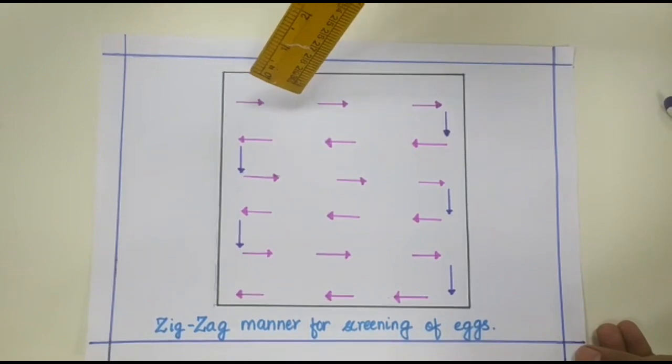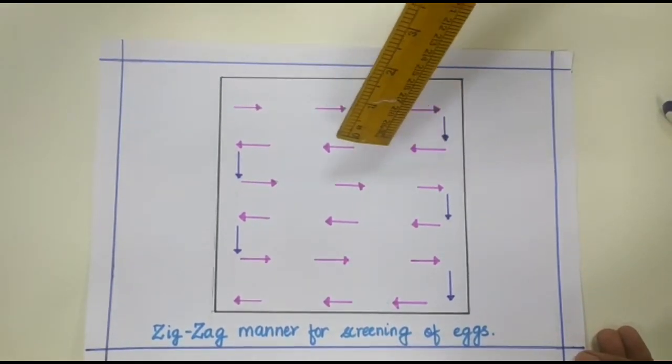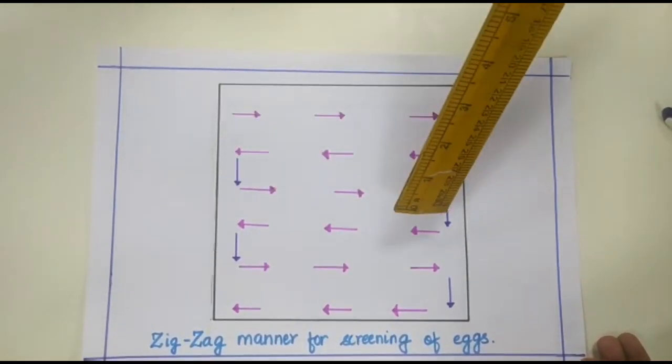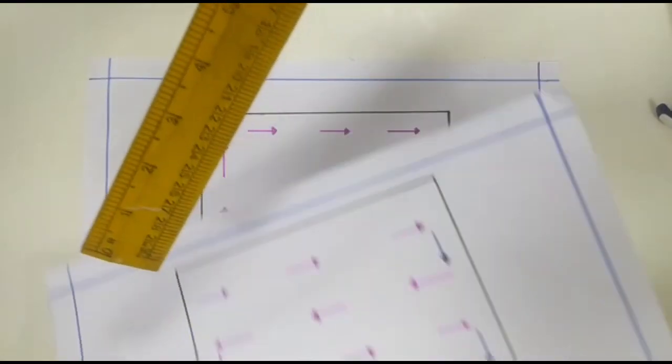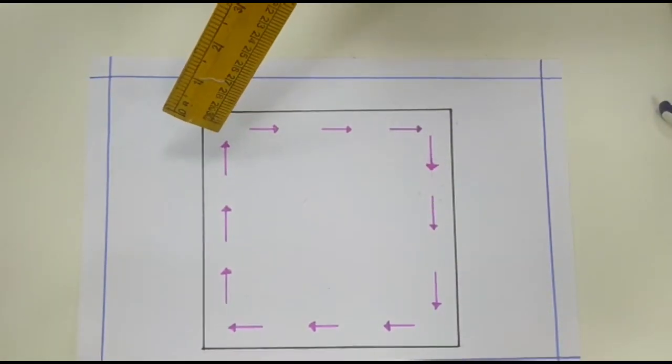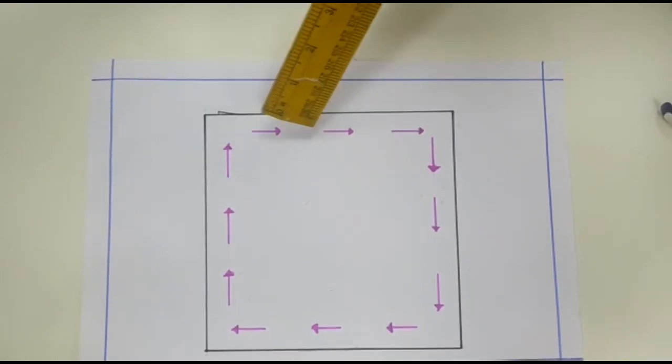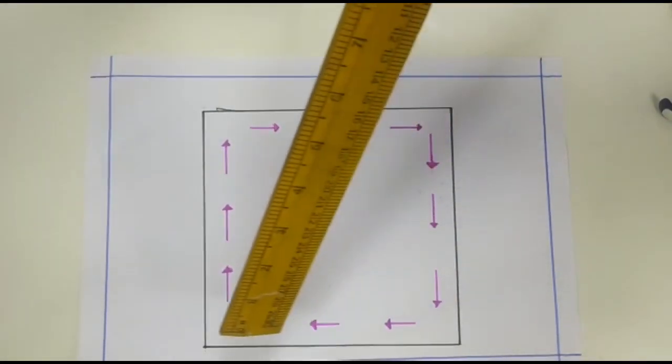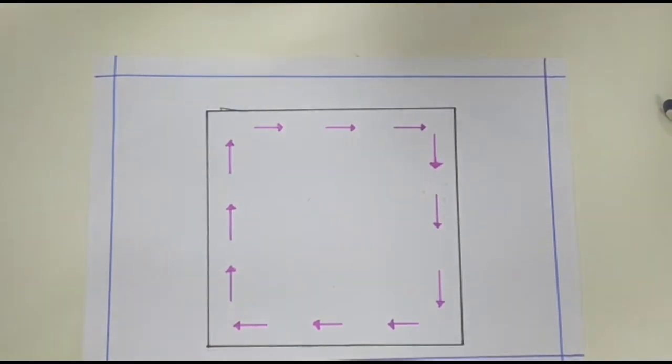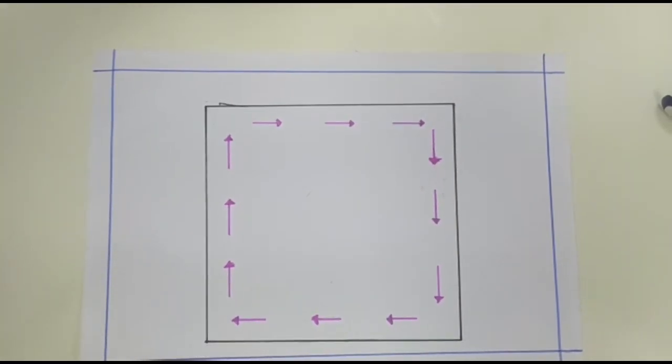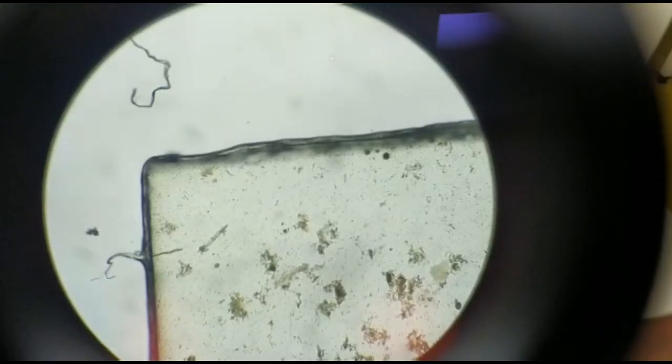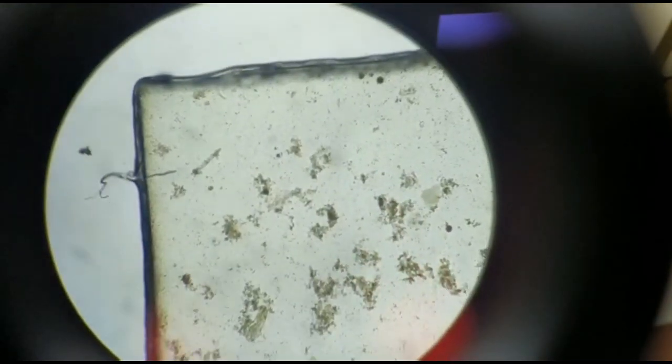Screening of parasites should start from one corner and then in zigzag manner till eggs or cysts are found. However, we recommend screening of all borders first which will surely help you early detection of eggs or cysts. If not found, follow zigzag manner. Let's search the egg as described in 10x magnification.